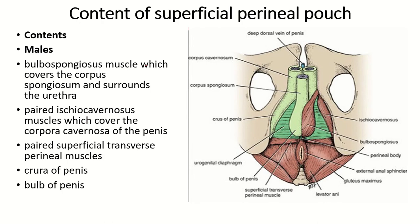Now the contents of the superficial perineal pouch. There are three erectile tissues: two corpora cavernosa and the corpus spongiosum. The dilated portion of the erectile tissue is known as the bulb of the penis, which is covered by the bulbospongiosus muscle. The crus of the penis is the root of the corpus cavernosum, and this crus is covered by the ischiocavernosus muscle. The superficial perineal pouch also contains the superficial transverse perineal muscles.